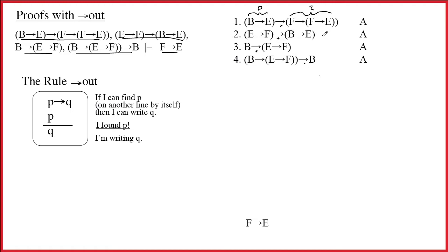So now I'm going to look at line number two. The middle arrow is the main connective, so that means E arrow F is P and B arrow E is Q. And when I read this, I say to myself, if I can find E arrow F on another line by itself, then I can write B arrow E. Do I find E arrow F on another line by itself? Well, and the answer is no. E arrow F on three? Not by itself. And obviously, E arrow F shows up again on four, but it's not by itself.